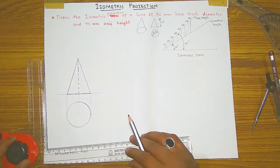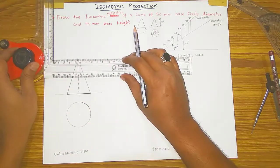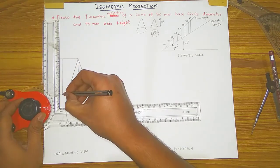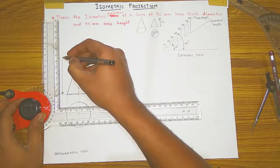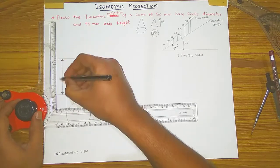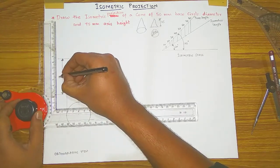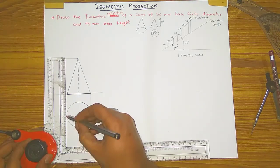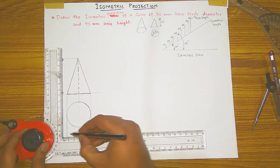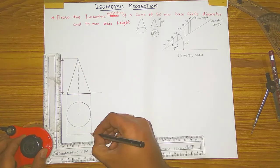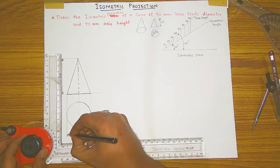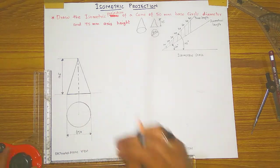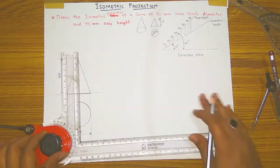Draw the axis line, then draw the slant edges for the pyramid — a pyramid has been created. Now show the dimension of the axis height by taking extension lines and a dimensioning line, marking it as 75 mm. Also show the diameter by taking extension lines of the circle, drawing the dimensioning line and marking diameter as 50 mm. Your orthographic view is now created.